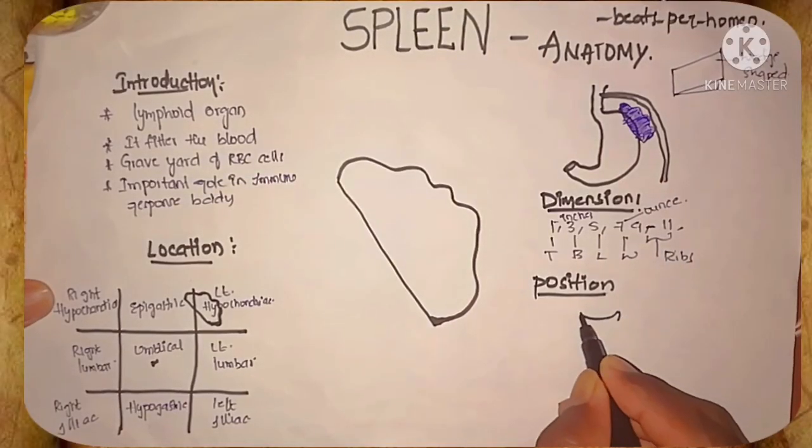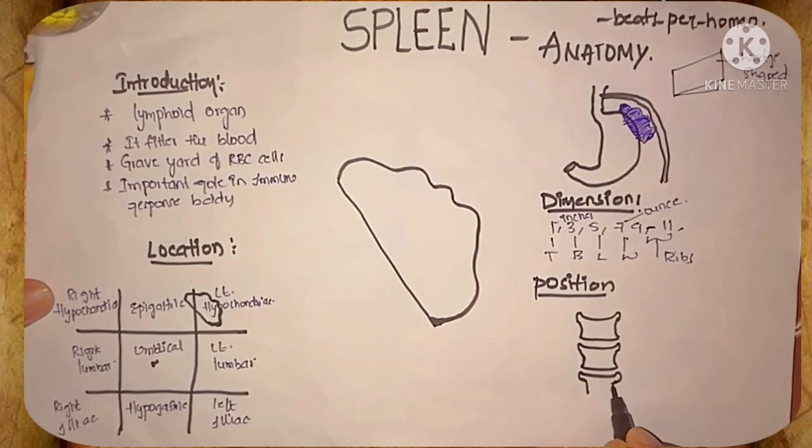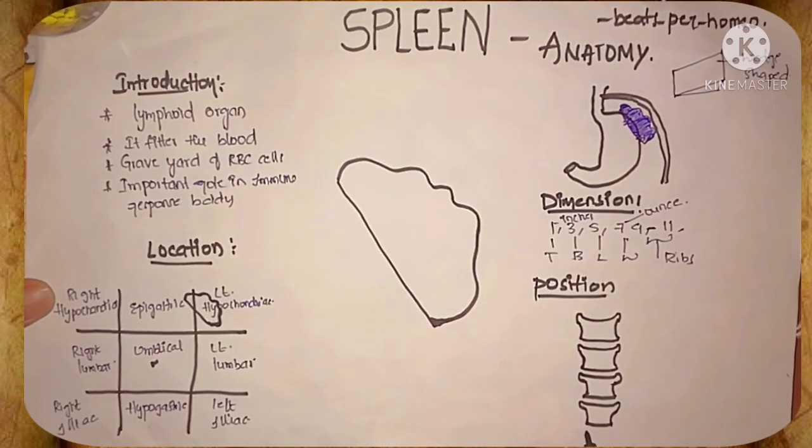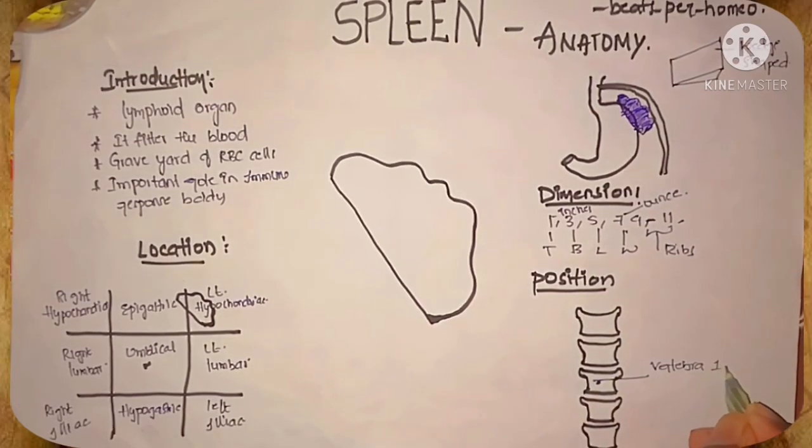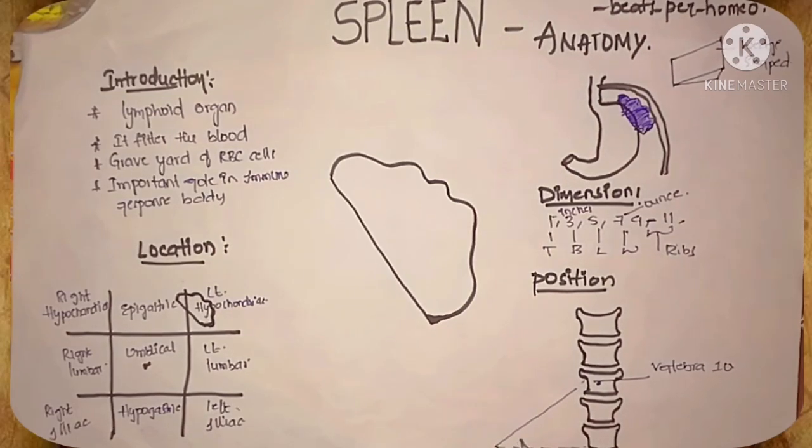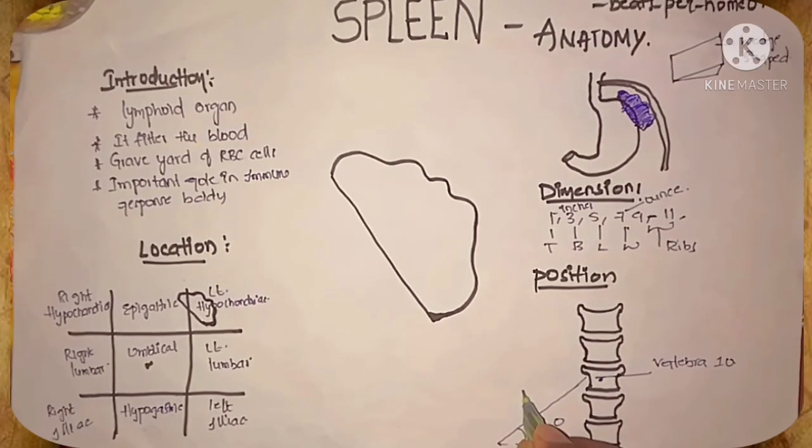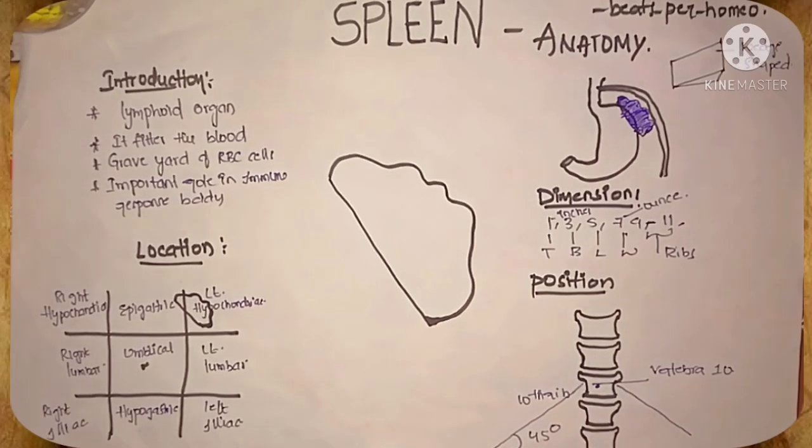Now coming to the position of the spleen. The angle with the vertebra and ribs. The spleen lies in the position of obliquus along the axis of the 10th rib and vertebrae 10, then making a direction towards downwards, forward, and making angle with 45 degrees between the horizontal plane.